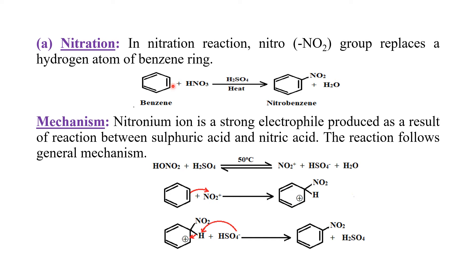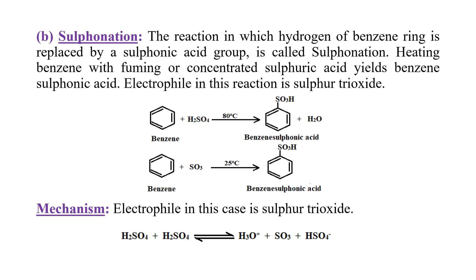Benzene का पहला substitution reaction है nitration reaction जिसमें एक nitro group benzene ring की hydrogen को replace करके nitrobenzene बना देता है। Benzene reacts with nitric acid in the presence of sulfuric acid at high temperature - as a result we get nitrobenzene and water। Mechanism: पहले step में strong electrophile produce होता है which is nitronium ion, produced when nitric acid reacts with sulfuric acid at 50°C in a reversible reaction, giving nitronium ion, hydrogen sulfate ion, and water। Second step में benzene ring nitronium ion पर attack करके benzenonium ion produce करती है। Last step में hydrogen sulfate ion benzenonium ion के hydrogen पर attack करके nitrobenzene produce कर देता है और catalyst दुबारा produce हो जाता है।